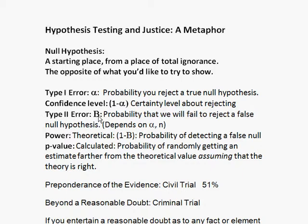A type 2 error, beta, is the probability you will fail to reject a false null hypothesis — the null hypothesis is false but you don't detect it. Power is 1 minus beta: that's how probable it will be that if the null hypothesis is false, your evidence and data will show that it is false. A p-value is something that you calculate or estimate — it's the probability that if the null hypothesis was true, what is the likelihood that you could have gotten data like this, or evidence this far away from that null hypothesis starting place. The p-value tells you some information about the likelihood that the null hypothesis is true, though not technically speaking.